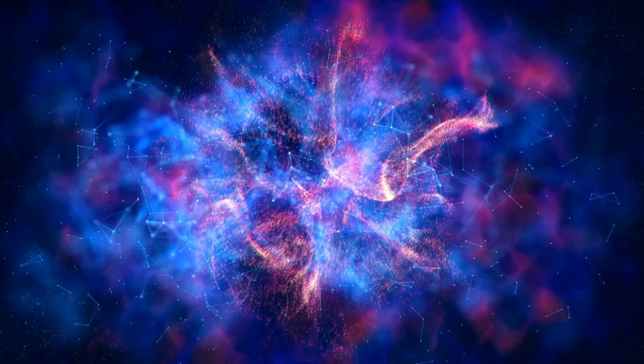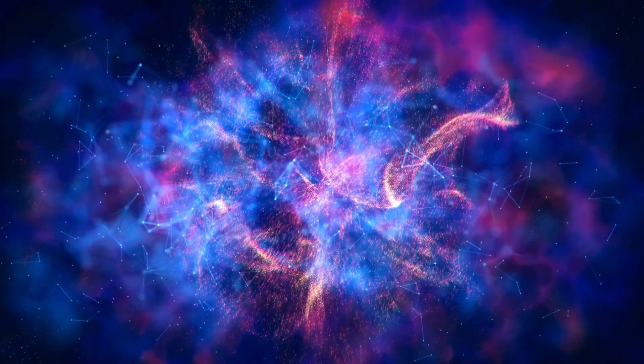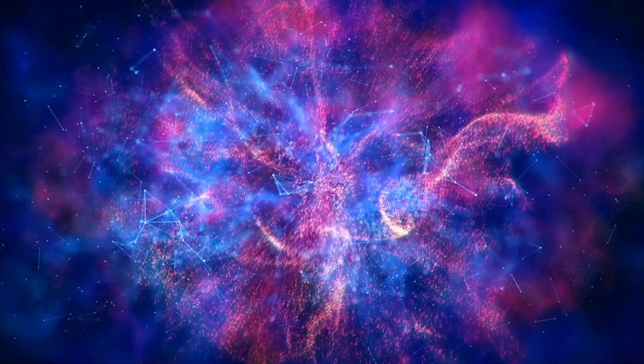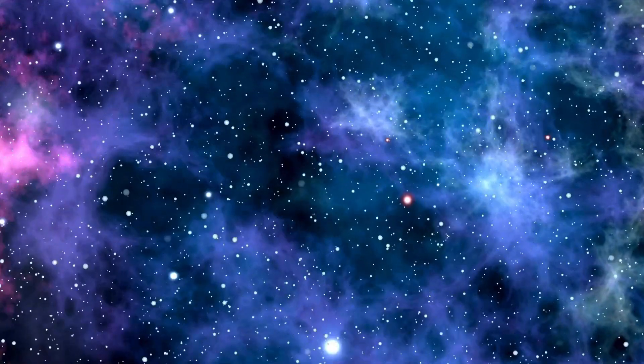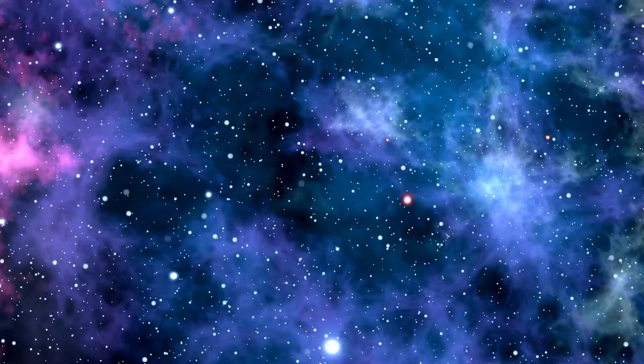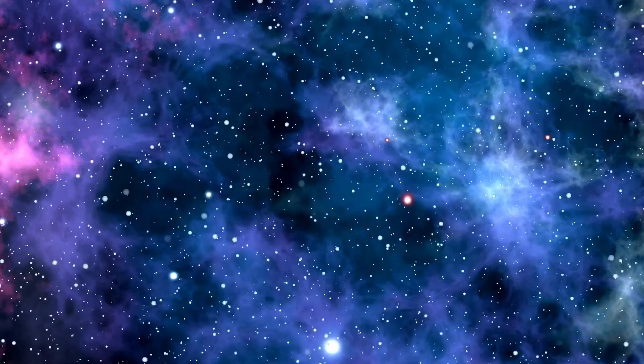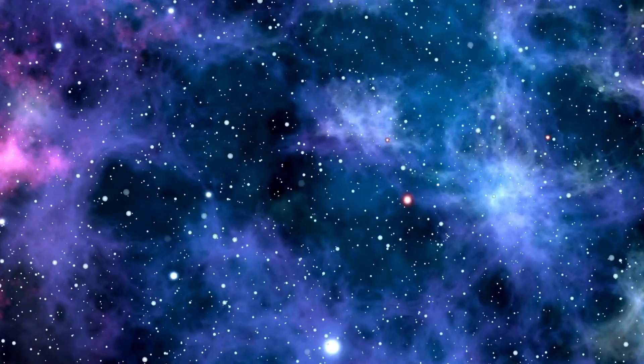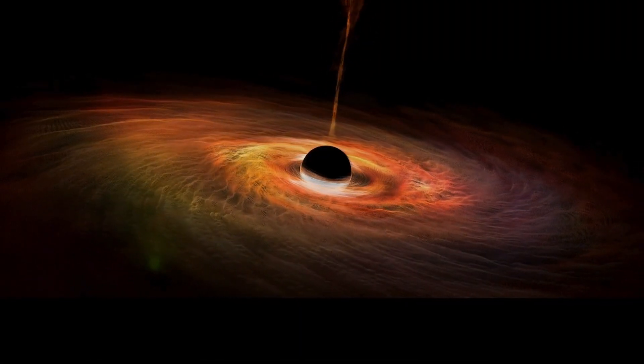But why did this crack form? The culprit is known as a co-rotating interaction region (CIR) from the sun. CIRs are vast plasma structures created when different speeds of solar winds interact. Imagine two rivers, one slow and one fast, merging into a tumultuous waterfall. These CIRs, along with other phenomena like coronal mass ejections, are thrown from the sun towards Earth.